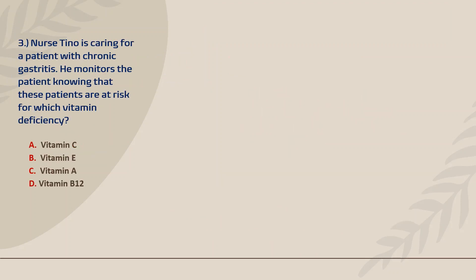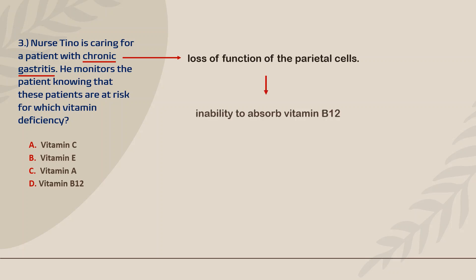Question number three. Nurse Tino is caring for a patient with chronic gastritis. He monitors the patient knowing that these patients are at risk for which vitamin deficiency. Chronic gastritis causes deterioration and atrophy of the lining of the stomach, leading to the loss of function of the parietal cells. The source of the intrinsic factor is lost, which results in the inability to absorb vitamin B12, leading to the development of pernicious anemia. Therefore, the correct answer is D — the patient will be at risk for vitamin B12 deficiency.